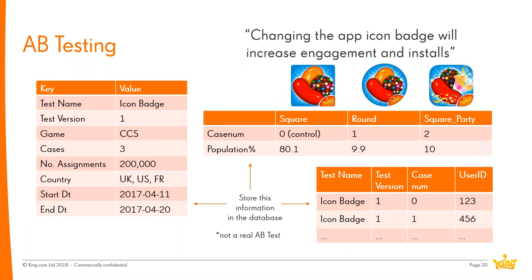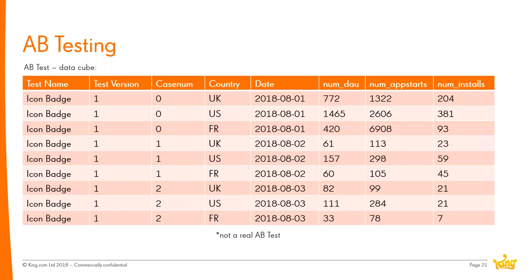To produce analytics on a test, a core set of data is needed: general information about the test, the population split between variants, and which users are assigned to which variant. Once tracking is confirmed and the test is run, data is summarized into a data cube to analyze and check the hypothesis. The data cube shows measures for each date, country, test name, version, and variant, allowing comparison against the control group — case number zero — to prove or disprove the hypothesis.